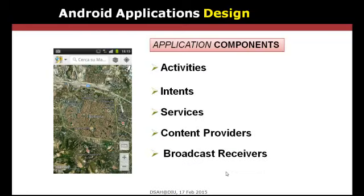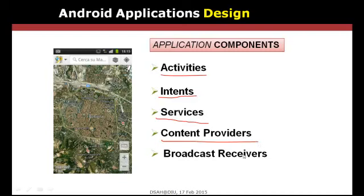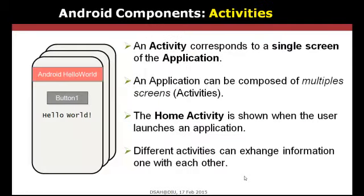Application components — we basically have five well-defined components, categorically starting with Activities, which is what the user sees; Services, which are applications running in the background; Content Provider for data; and Broadcast Receiver for services running in the background to handle SMS, internet, and so on. I will quickly go through each, starting with Activity.